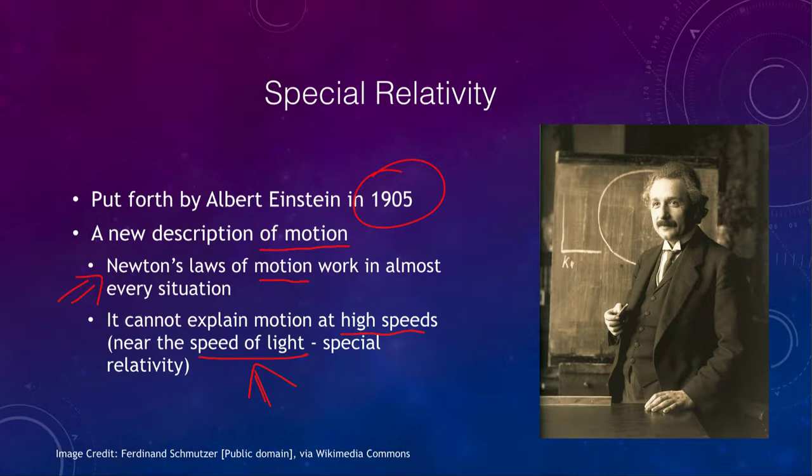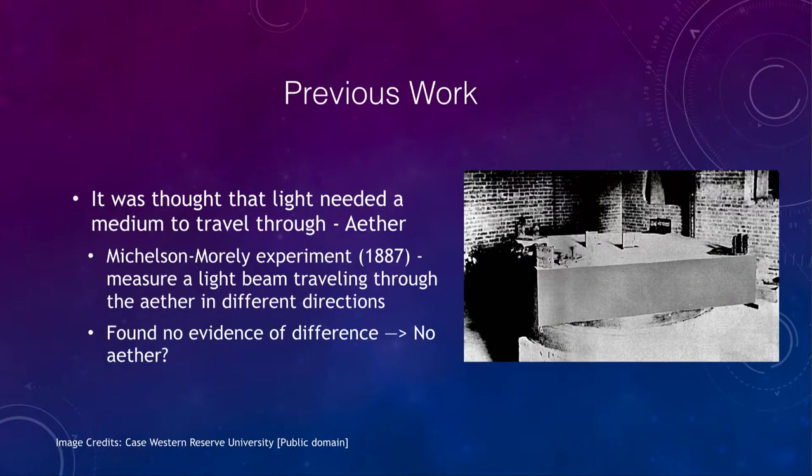So what was some of the earlier work that even predates Einstein in this? Long ago, it was thought that light, like sound and all other waves, needed a medium through which to travel. And this was called the ether. Now the ether was not known, was tried to be detected. And in fact, the Michelson-Morley experiment in 1887 at Case Western Reserve University was going to try to measure the ether.